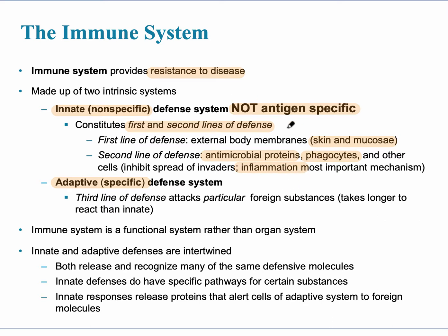All of those second-line components are not antigen specific. The third line of defense — the adaptive system — takes longer to react but has the ability to remember what an antigen first looked like. The immune system is not a structural system like the cardiovascular system; it's more of a functional system, and you can think of the lymphatic system as its playground.